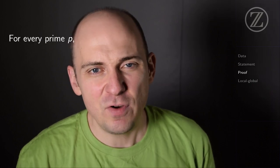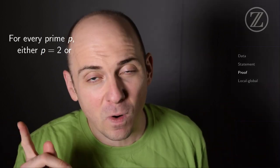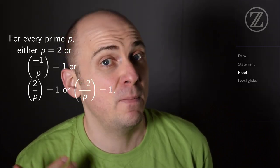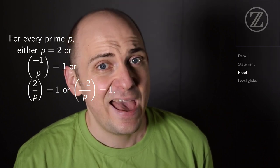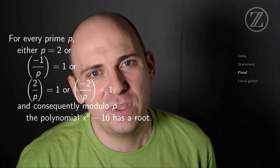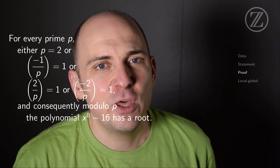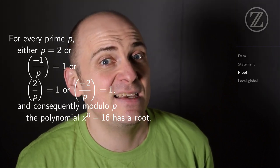Here's maybe an easier way to summarize what we just saw. Every prime is either 2, or that prime p is a prime such that (-1/p) = 1, or (2/p) = 1, or (-2/p) = 1. And we can put all that together then to conclude that for every prime p, the polynomial x to the 8th minus 16 has a root.